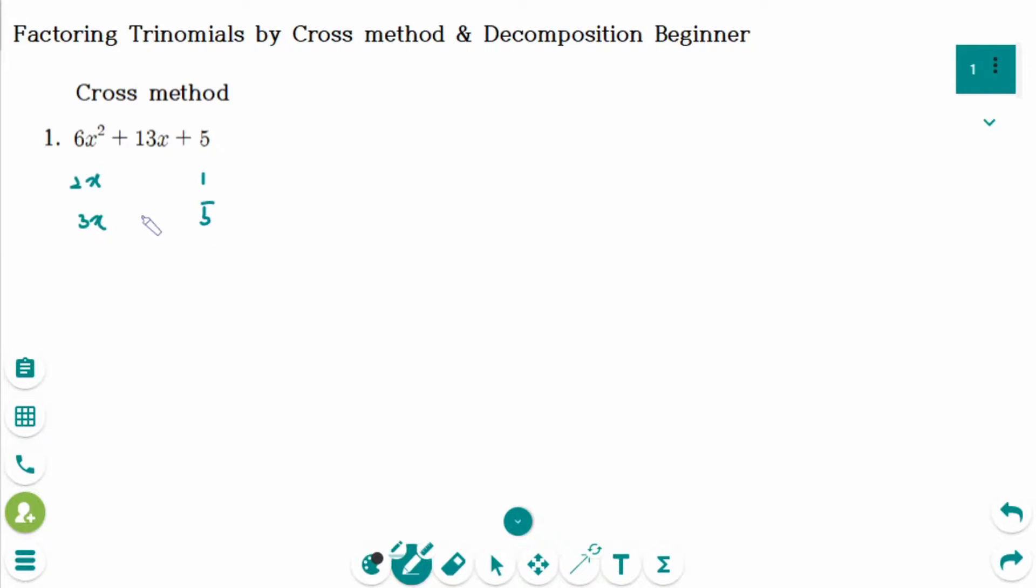When you cross multiply, we get 3x and 10x, which has a sum of 13x.